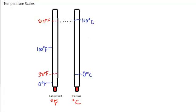So we see that 100 degrees Celsius is the same degree of hotness as 212 Fahrenheit. 0 degrees Celsius is the same degree coldness as 32 degrees Fahrenheit.